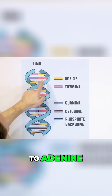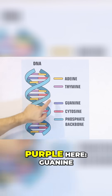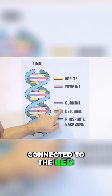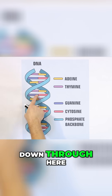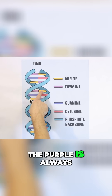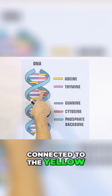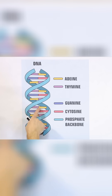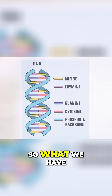Notice the purple here is thymine and it's connected to adenine. And here is a deeper purple — guanine — connected to the pink one called cytosine. Looking down through the helix, you can see the pattern: thymine and adenine are always paired together.